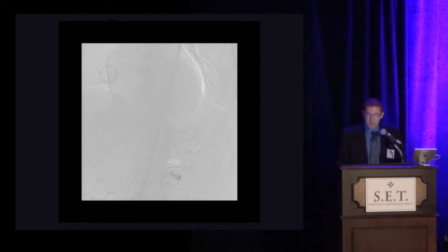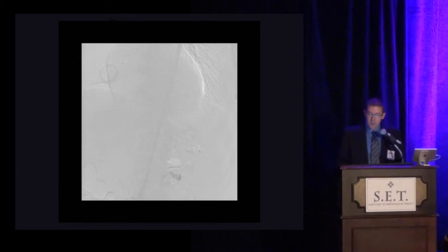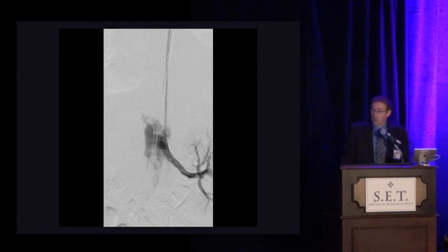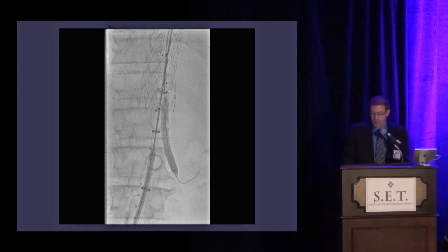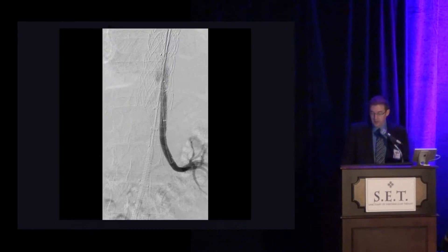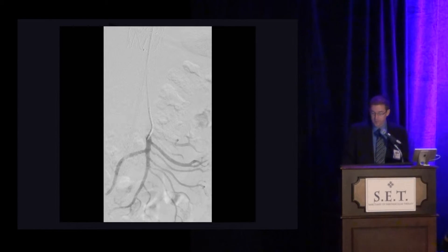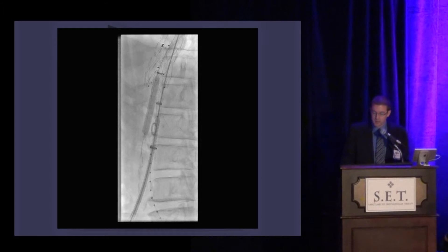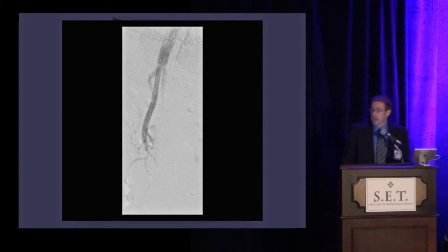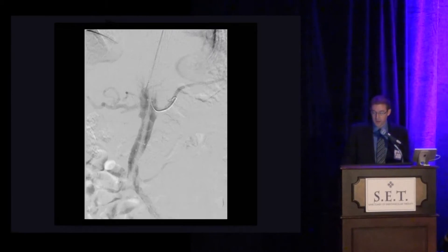Once we obtained access, this is the first aortogram. This shows the Valiant device, which I planned to put in first so the Endurant branch graft would land inside it for extra support. Here you can see our graft is deployed, and we're coming from the arm through the long Viabahn branch going to the left renal, connecting with an Atrium ICAST stent. Then we selected the SMA with another Atrium ICAST, and then the celiac with its Atrium ICAST and final run.